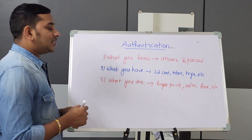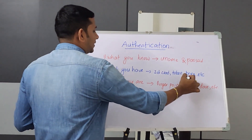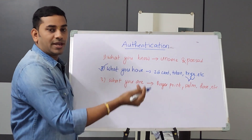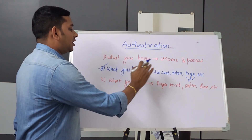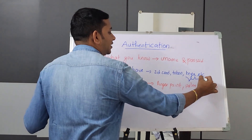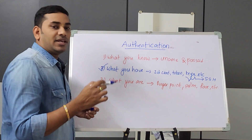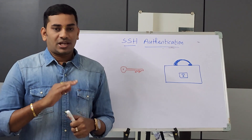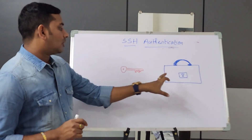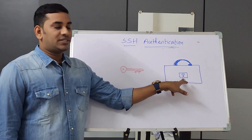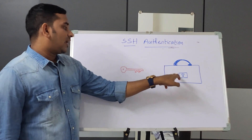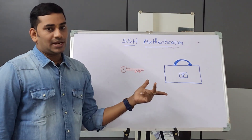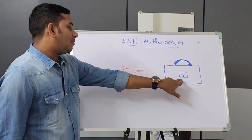So, passwordless authentication falls under 'what you have.' In SSH authentication, public key and private key allow a user to connect. Let me give an example using a briefcase analogy. Think of a physical briefcase with a physical lock — the lock is public and anyone can see it, but the key to open it is private.